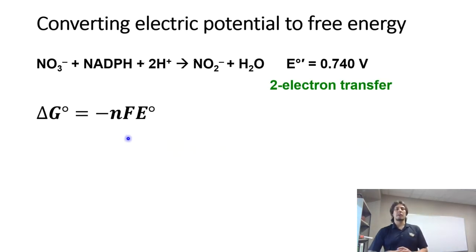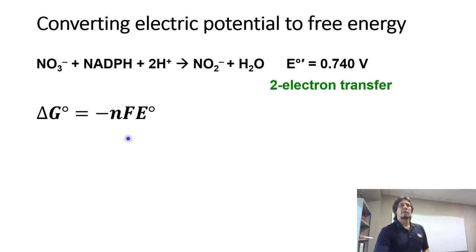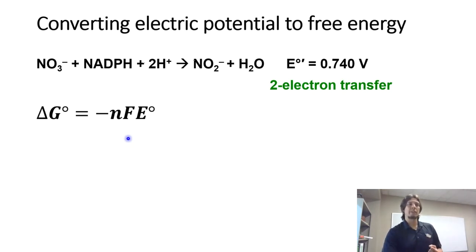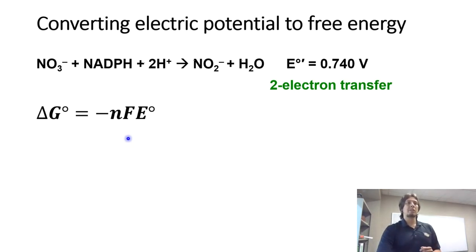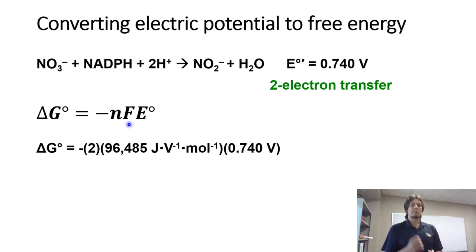Now we can convert this to a free energy value. We have a positive overall reduction potential for the reaction, which means we should have a product-favored reaction, since a positive reduction potential gives a negative Gibbs free energy. We plug into the Nernst equation: delta G-not equals negative n times F times E. N is the number of moles of electrons transferred — we noted that was a two-electron transfer, so n equals 2.